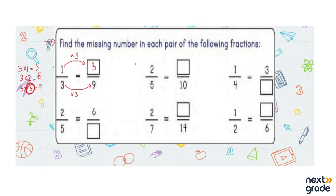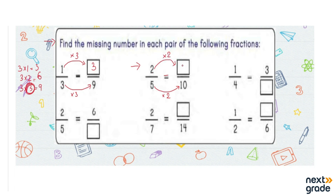In the next example they have given 2 over 5, and we need to find the numerator of the equivalent fraction. We see that 5 has been multiplied by 2 to make 10, so the multiplier is 2. We do the same with the numerator: 2 multiplied by 2 is 4. So the equivalent fraction is 4 over 10.